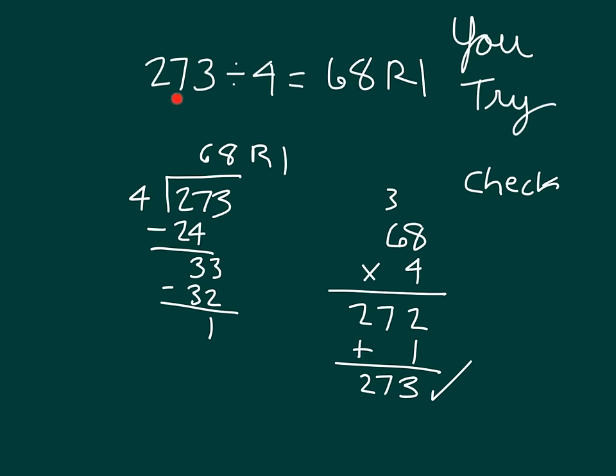So we have 273 divided by 4, equaling 68, remainder 1. And the way we checked it is we went the other way: 68, we multiplied by 4, and we remembered to add in that remainder.